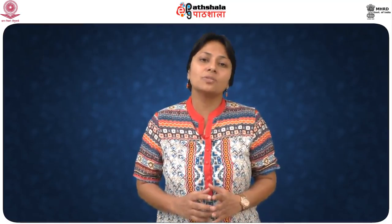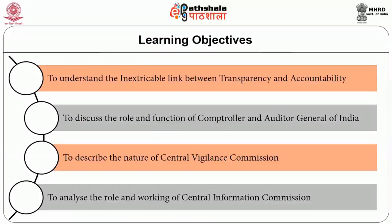Three such important institutions are the Central Vigilance Commission, the Comptroller and Auditor General of India, and the Central Information Commission, which work relentlessly to ensure simple, moral, accountable, responsive and transparent administration in India. In this module, we will discuss these three august institutions and their functioning. The objectives are to understand the link between transparency and accountability, discuss the role of CAG, describe the nature of CVC, and analyse the role of the Central Information Commission.